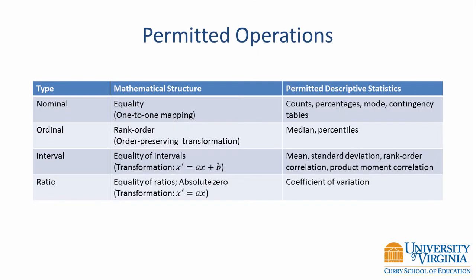Stevens' typology is ordered such that nominal data is at the bottom and ratio data is at the top. Operations permitted for one data type are not permitted for lower types. At the nominal level, we can perform one-to-one mappings — for example, changing the code for a single family home does not change the meaning of the variable. Descriptive statistics for nominal variables include counts, percentages, the mode, and contingency tables.